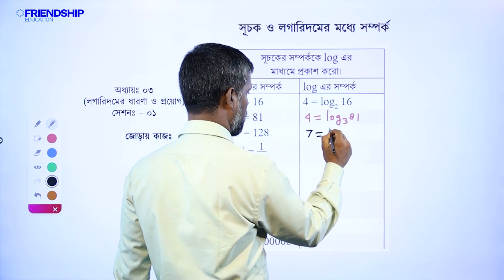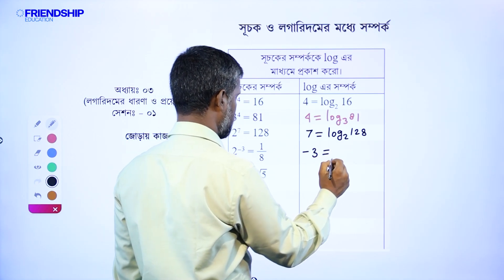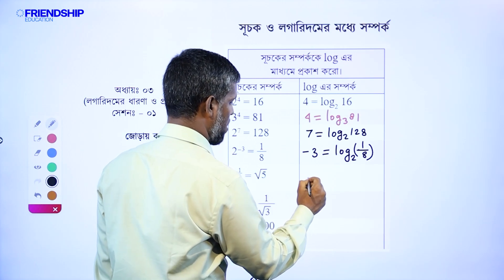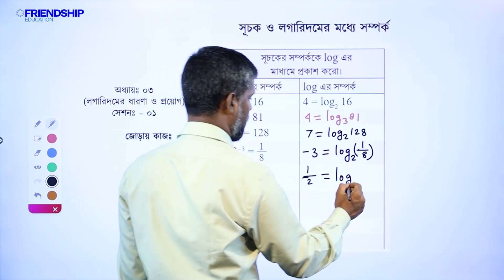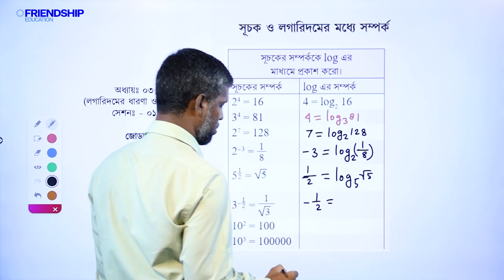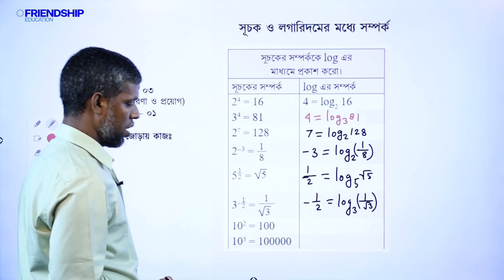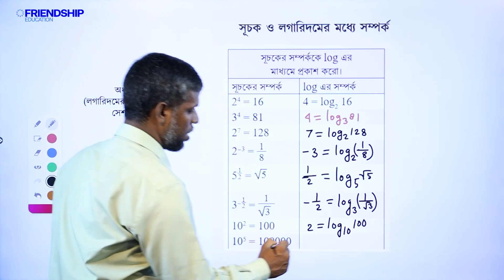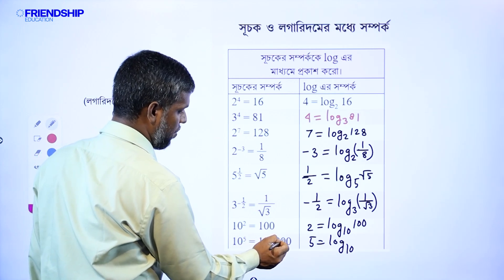7 equals log 2 base 128. 1 by 8: minus 3 is equal to log 2 base 1 by 8. Half is equal to log 5 base root of 5. Minus half is equal to log 3 base 1 by root 3. 2 is equal to log 10 base 100. 5 is equal to log 10 base 100000.